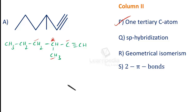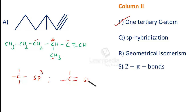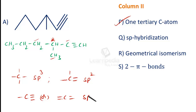Now for hybridization: whenever a carbon atom forms four separate single bonds, it is SP3 hybridized. Whenever a carbon forms one double bond and two single bonds, it is SP2 hybridized. Whenever a carbon forms one triple bond and one single bond, or two double bonds, it is SP hybridized. Since compound A has a triple bond, both those carbon atoms are SP hybridized, so property Q is satisfied.